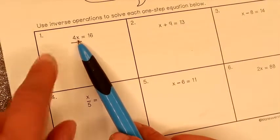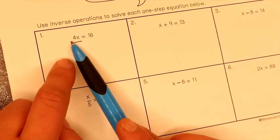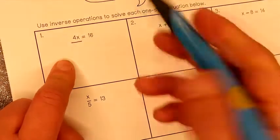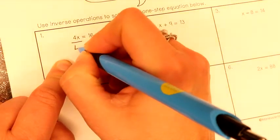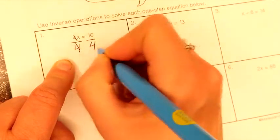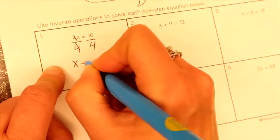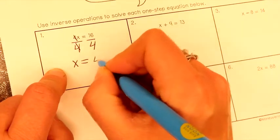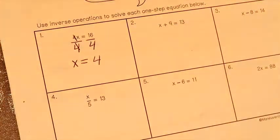See the X says 4 times X equals 16. We are going to divide 4 by 4. X equals 16 divided by 4 is 4. Not bad, right?